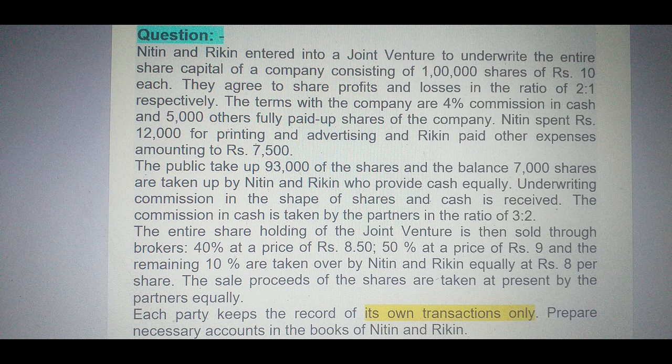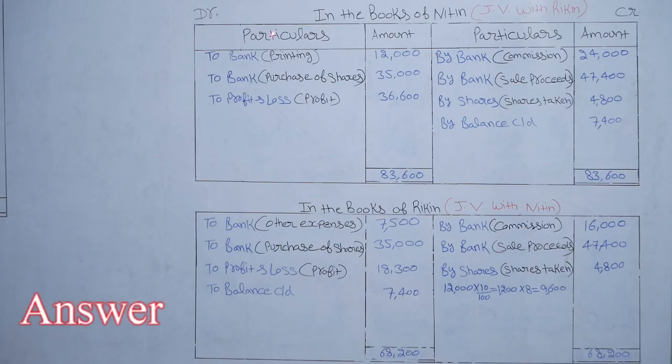The entire shareholding of the joint venture is then sold through brokers: 40% at a price of Rs 8.50, 50% at a price of Rs 9, and the remaining 10% are taken over by Nitin and Rikin equally at Rs 8 per share. The sale proceeds of the shares are taken by partners equally. Since each party keeps record of its own transactions only, we will apply the memorandum method.